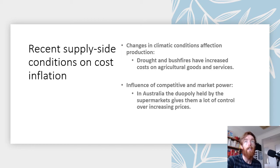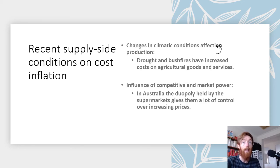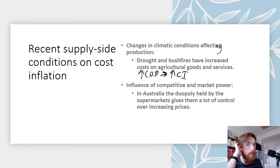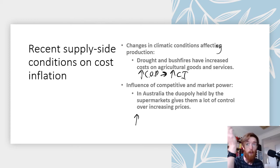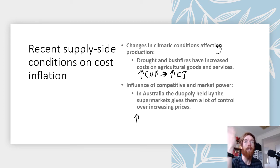Regarding changes in climatic conditions affecting production: drought and bushfires have been significant in limiting access to natural resources and increasing the cost of inputs, leading to increased cost of production and therefore increased cost inflation. Regarding the influence of competitive and market power: things like the Australian supermarkets in their duopoly or oligopoly have significant control over prices. During panic buying in March of last year, prices increased quickly due to scarcity, and it was also harder to source products — shipping became more expensive — which increased the cost of production and therefore cost inflation.